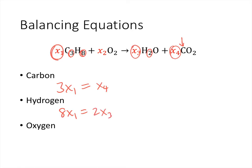On the left-hand side we have 2x2 atoms of oxygen, and oxygen appears twice on the right-hand side. We've got x3 H2O and then 2x4 from the CO2. And that gives us a system of three equations with four variables.